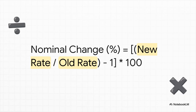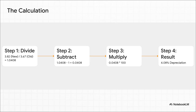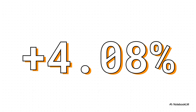Let's plug in the numbers. We take the new rate, 3.82, and divide it by the old one, 3.67. That gives us about 1.0408. Subtract 1, and we're left with 0.0408. Multiply that by 100, and we get our answer: positive 4.08%. That tells us the Israeli shekel had a nominal depreciation of 4.08% against the dollar in 2023. That positive number is the key — it confirms the currency got weaker.